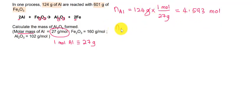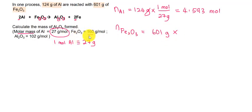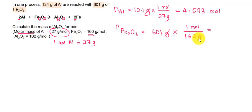Now for moles of Fe₂O₃: the mass given is 0.1 gram, and the molar mass provided in the question is 160 grams per mole. So using the conversion factor — 1 mole divided by 160 grams — we get 3.756 moles of Fe₂O₃.